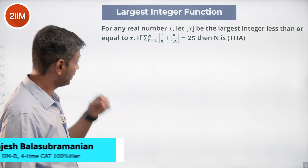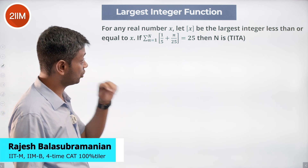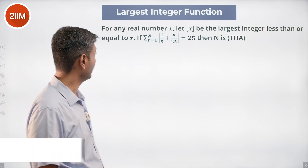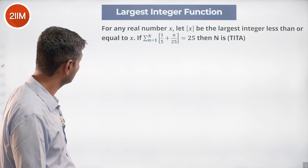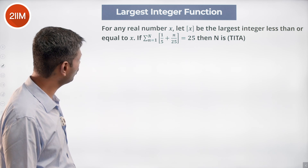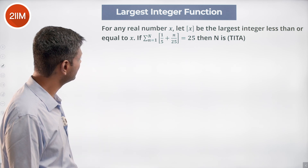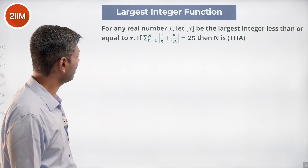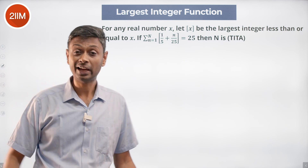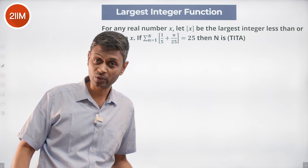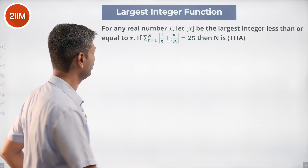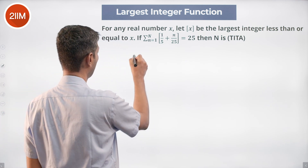For any real number X, let box of X be the largest integer less than or equal to X. If sigma from n=1 to N of floor(1/5 + n/25) equals 25, then N is? I brute force this kind of question — I put n equal to 3.